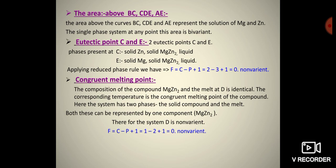There are two eutectic points at C and E. Phases present at C are: solid zinc, solid MgZn₂, and liquid. Phases present at E are: solid Mg, solid MgZn₂, and liquid. Applying the reduced phase rule at these eutectic points: F = C − P + 1 = 2 − 3 + 1 = 0. Hence, these two eutectic points are non-variant.